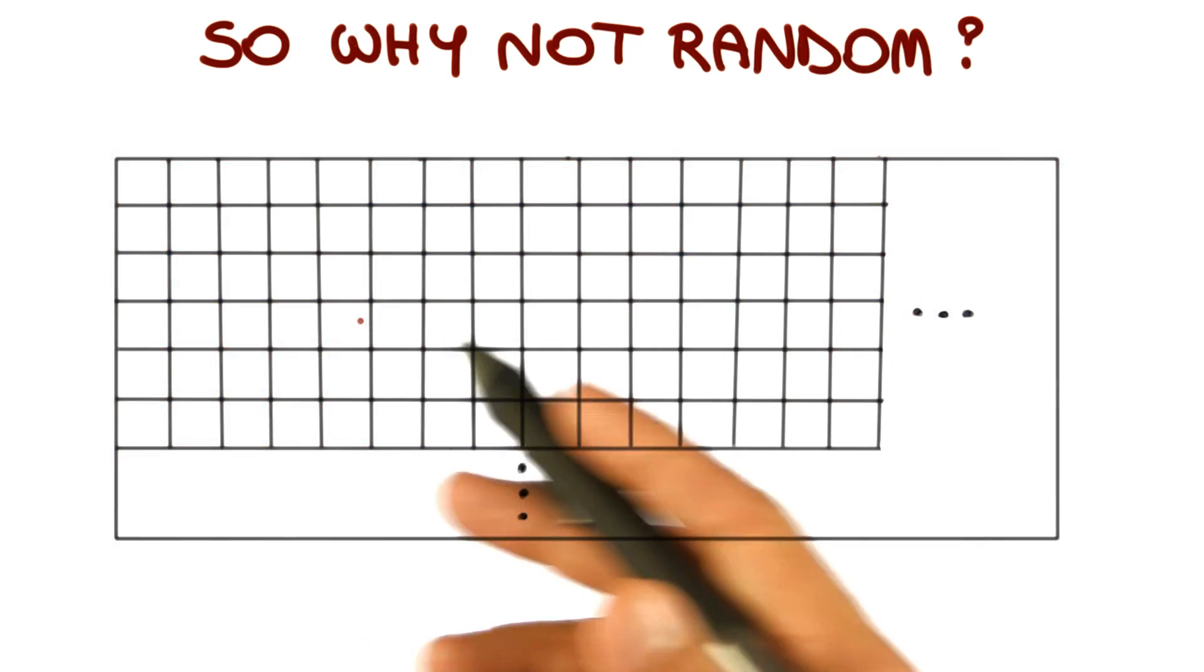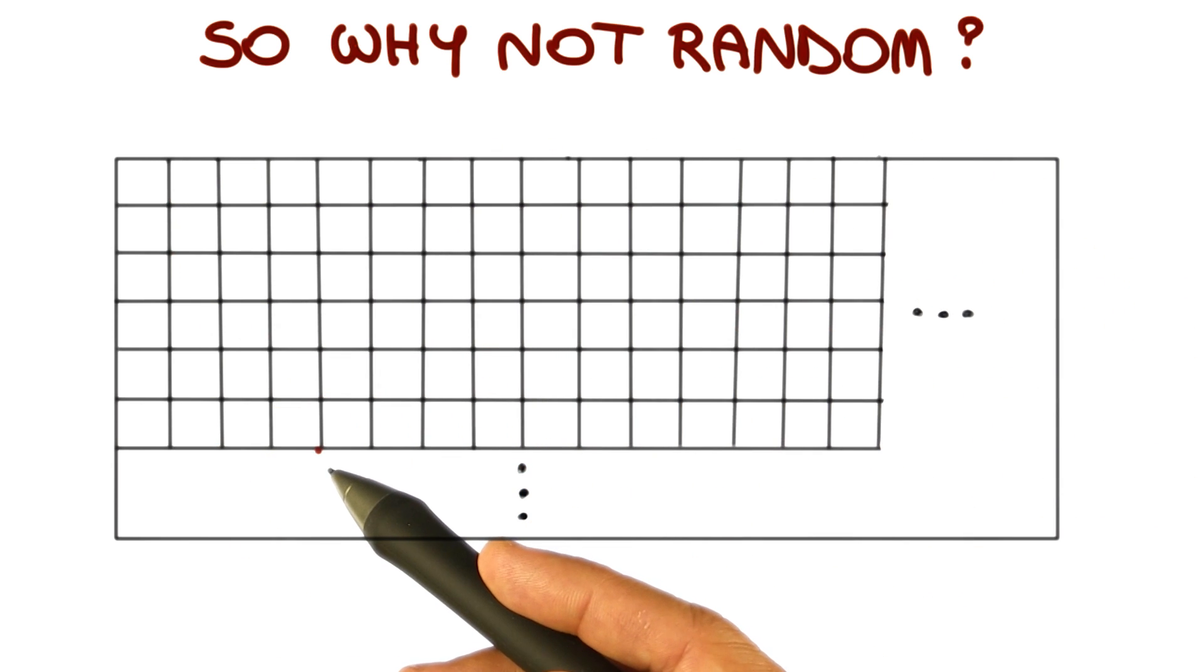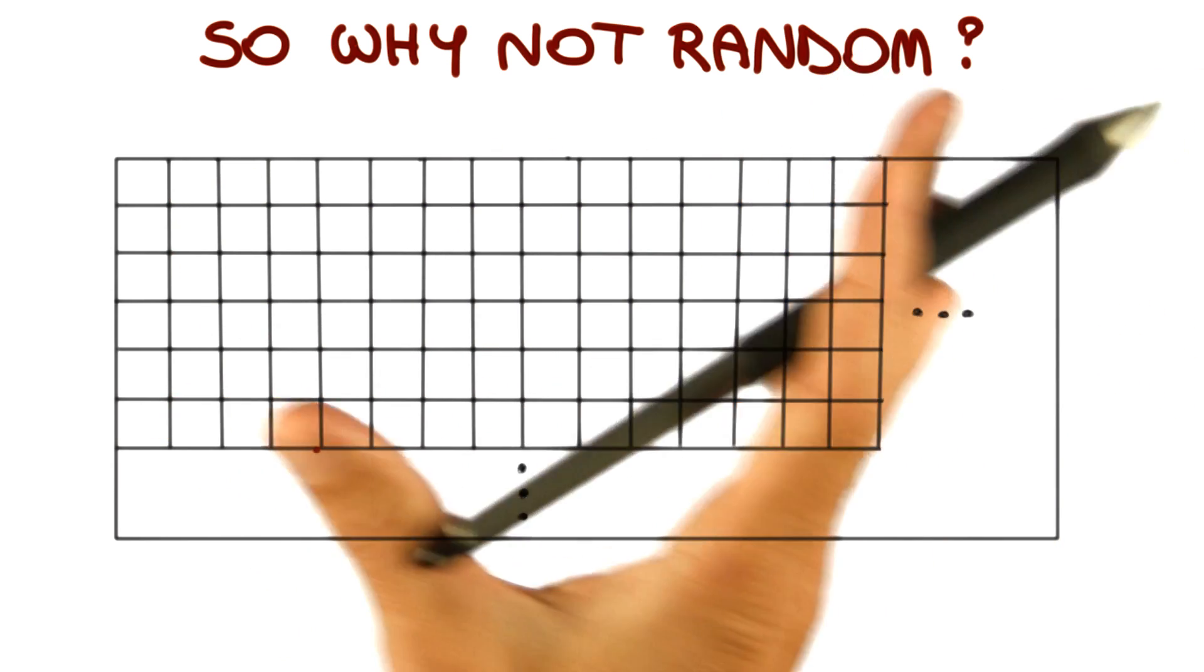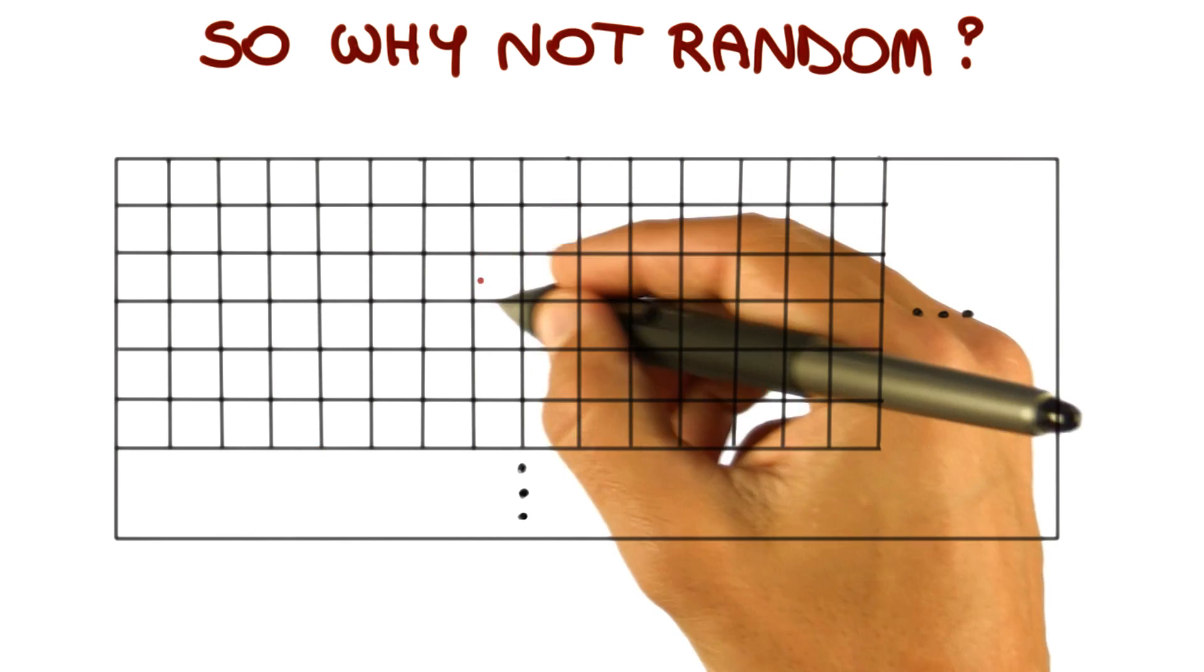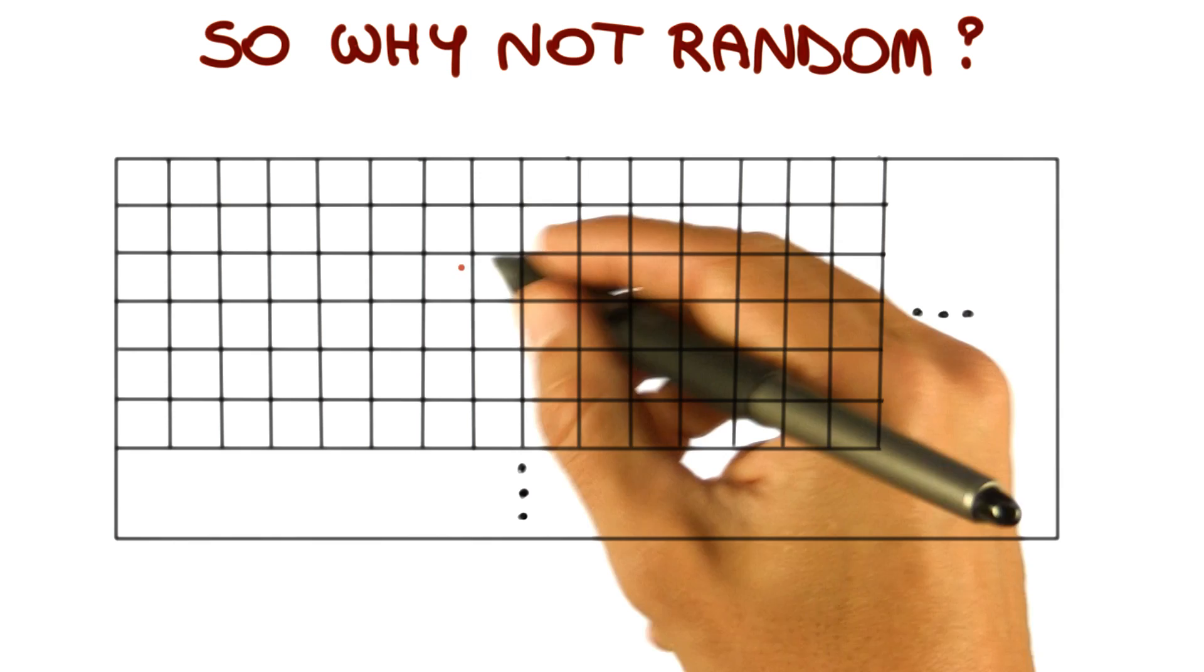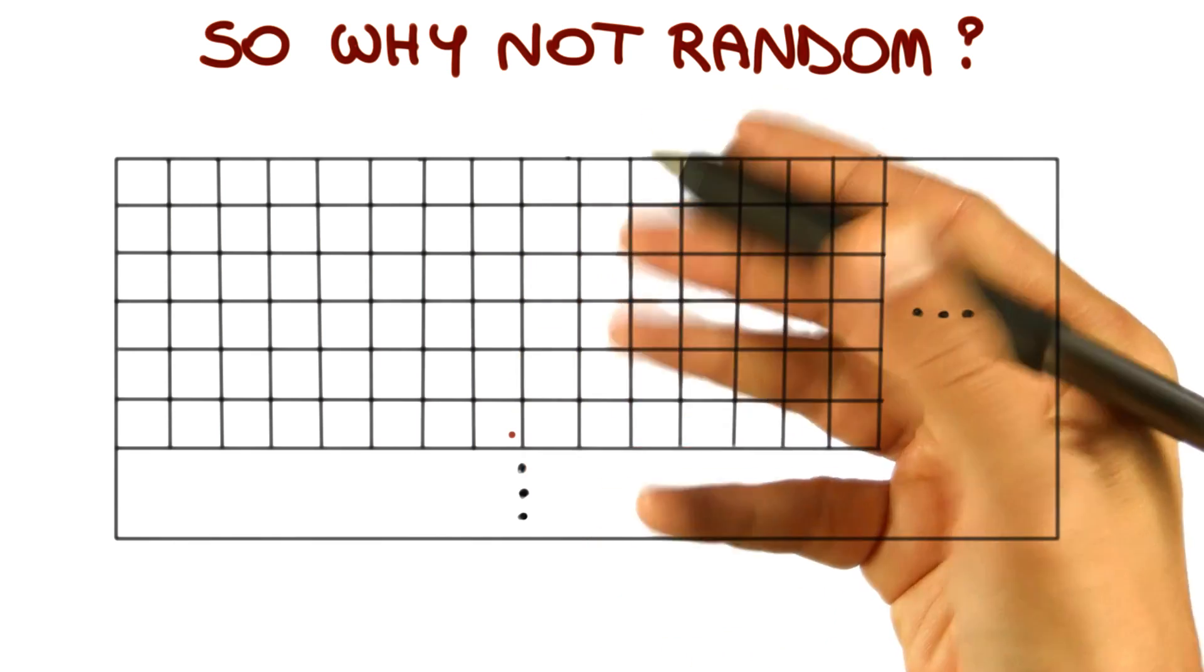Let me show you this using a different representation for the haystack. What I'm showing here is a grid, and imagine this grid just expanding indefinitely outside the screen. This grid represents the domain for the program. So each box in the grid, each square in the grid, is a possible input. What happens with bugs is that bugs are very scarce in this grid.